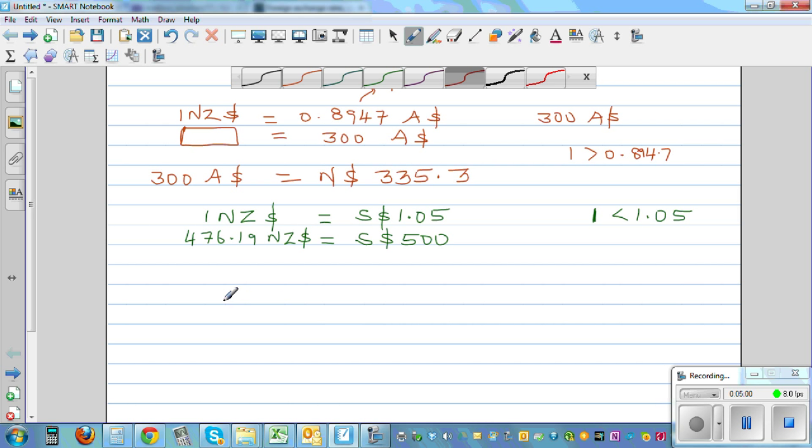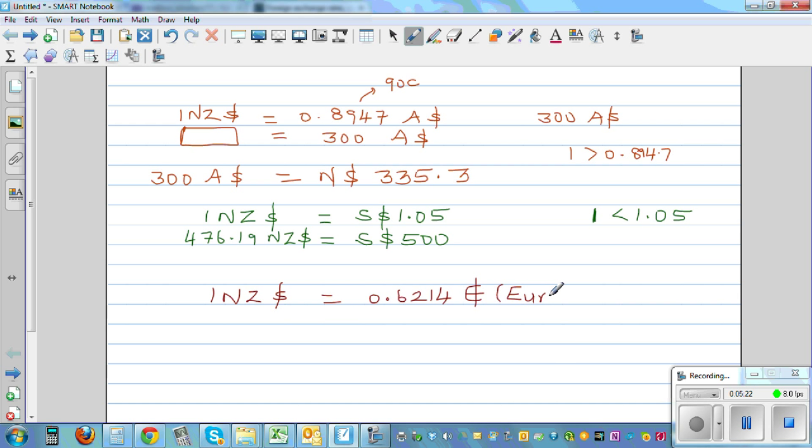Let me finish up with one more question. We've got 1 New Zealand dollar is 0.6214 euros. This is the notation for euros. So what's the relation? Well, 1 is greater than 0.6214.